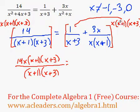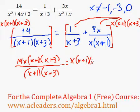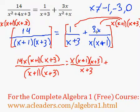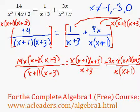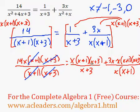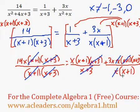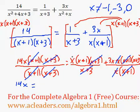Now we're going to distribute over on the right side. 1 times that whole thing would be just x times x plus 1 times x plus 3. The x plus 1's are going to cancel out, and the x plus 3's also. Over on this side, x plus 3 and x plus 3 will go away. One of these x's will also cancel out, and x plus 1 will cancel with x plus 1. So over on this side, we're left with just 14x, which equals x times x plus 1.